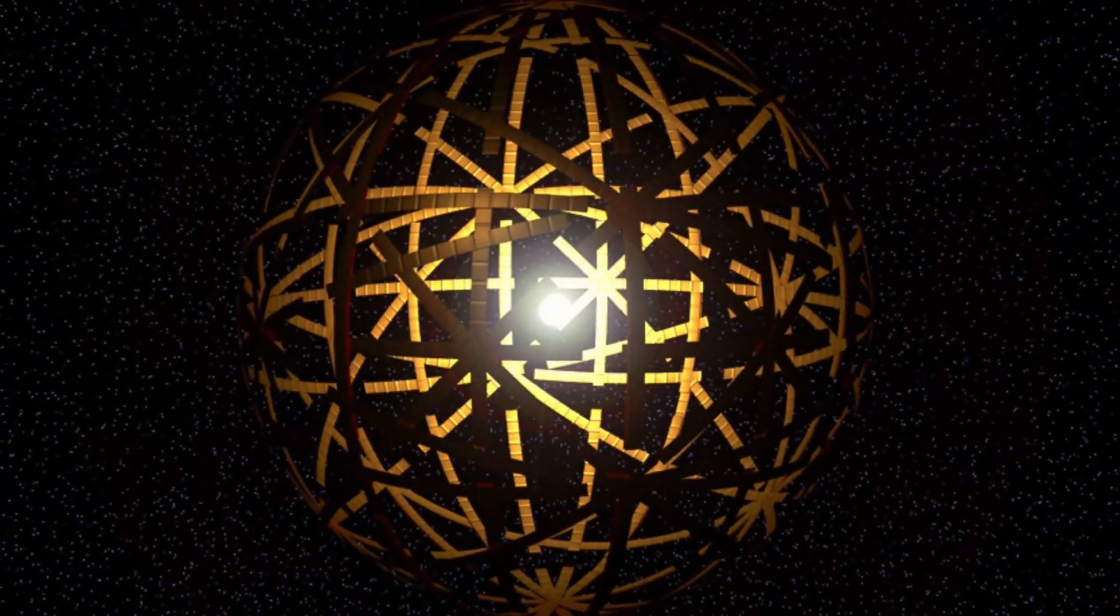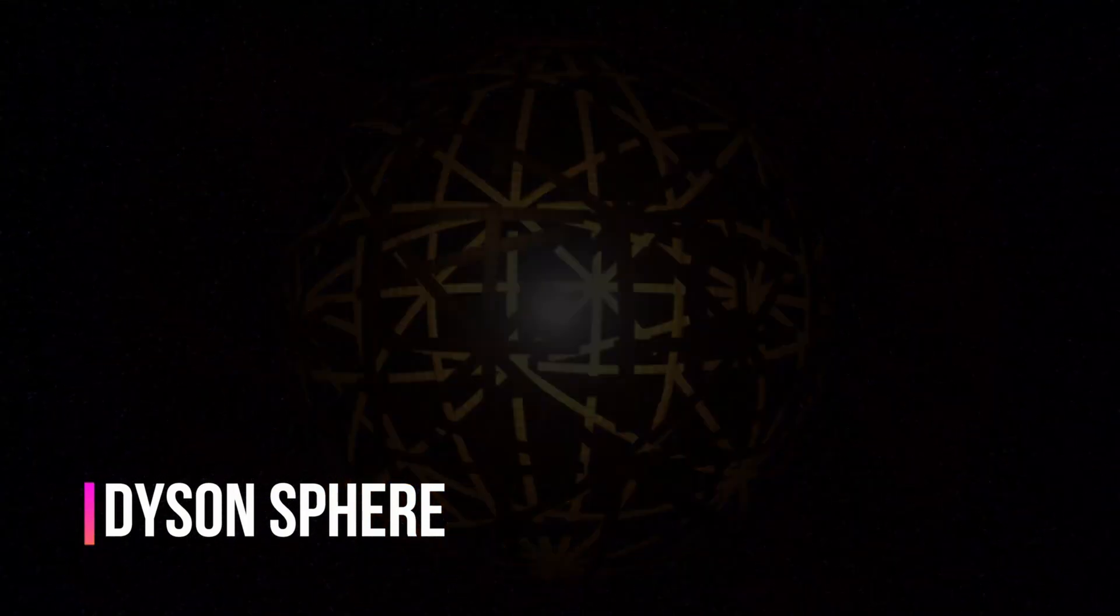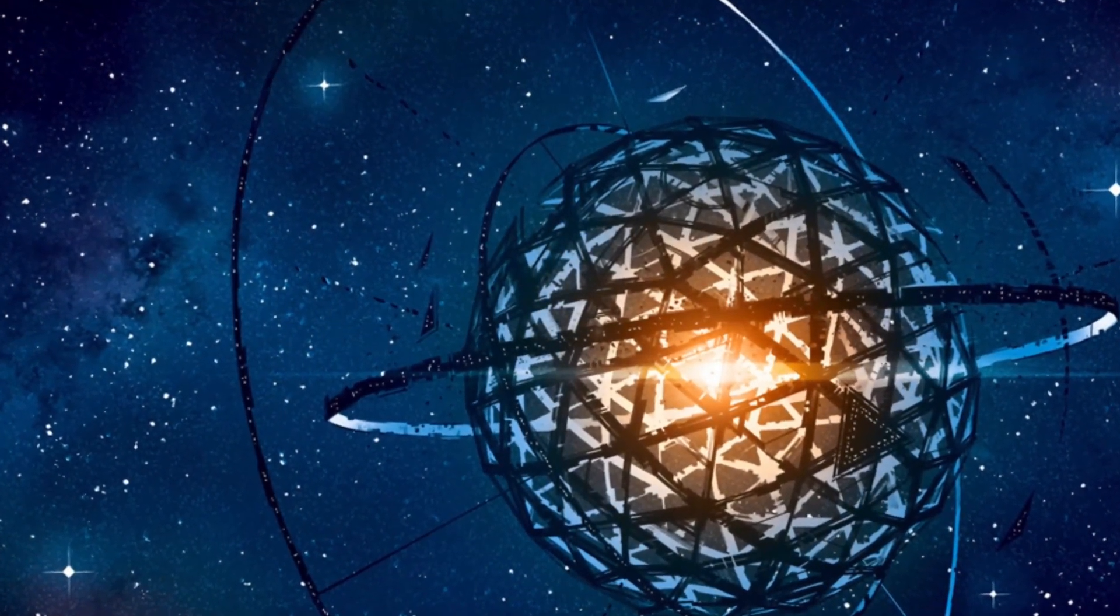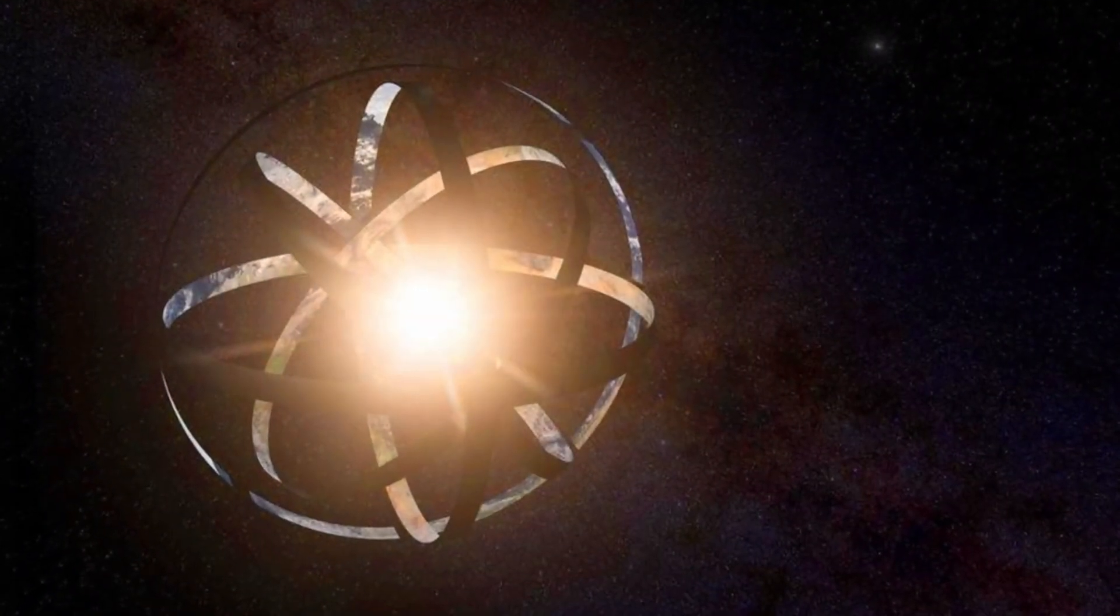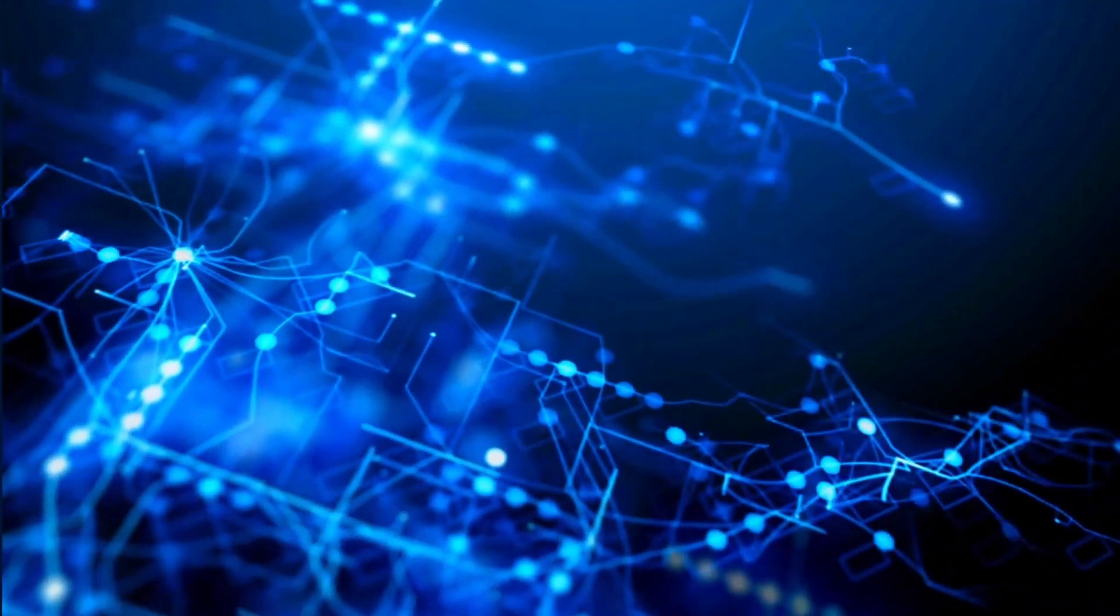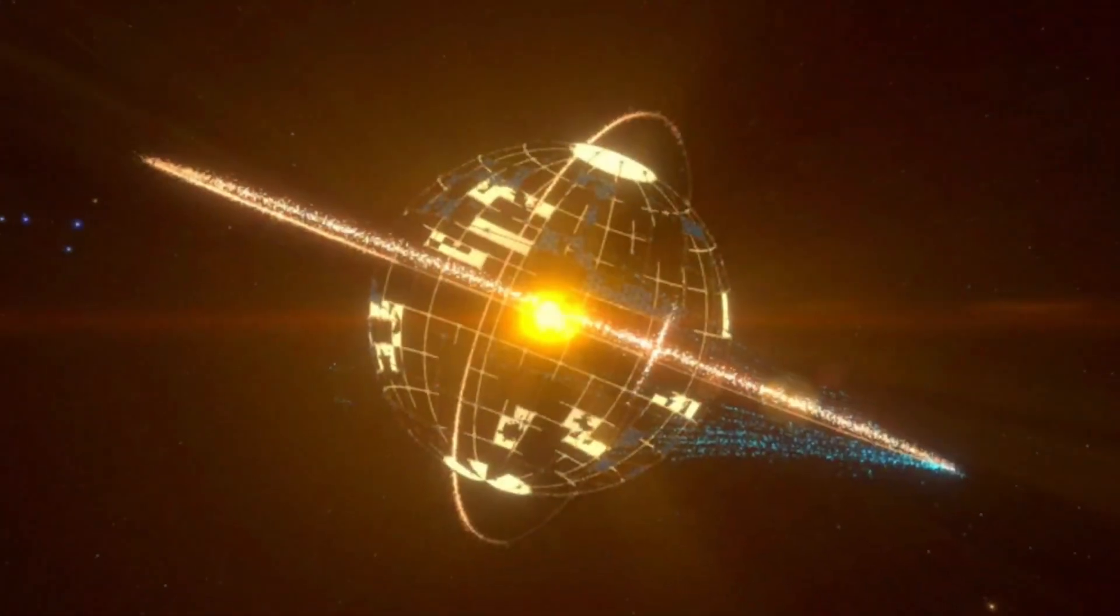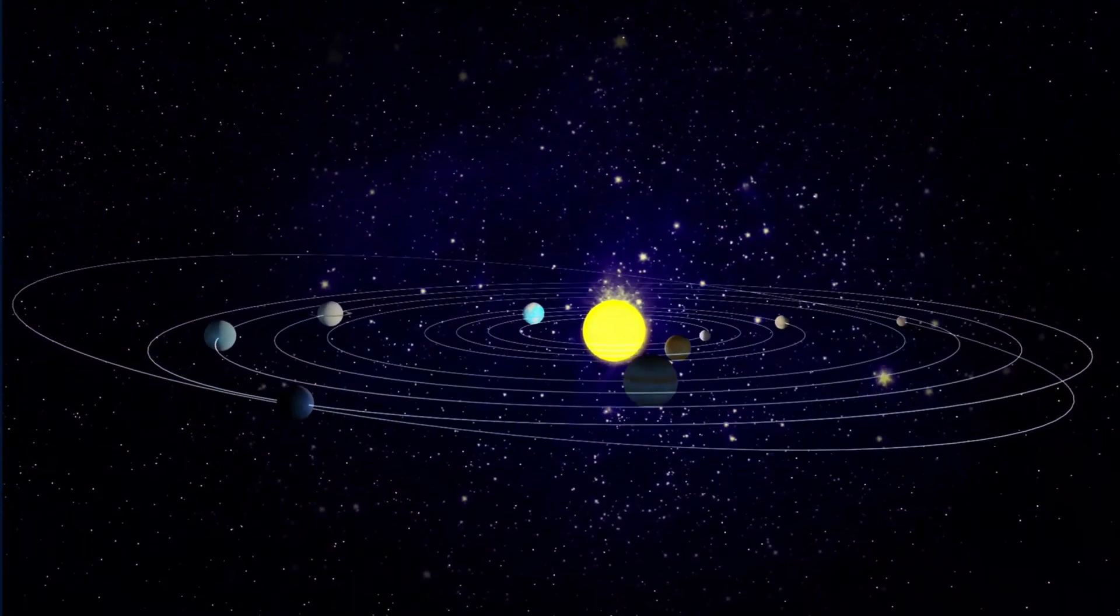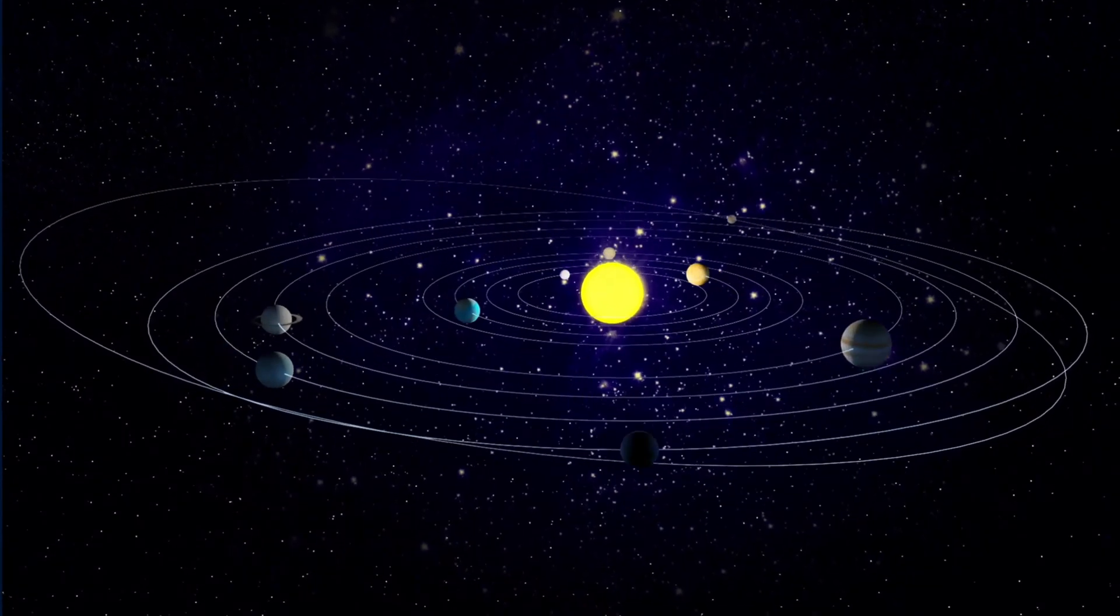One idea is to use a megastructure called a Dyson Sphere. In its simplified version, a Dyson ring would consist of a bunch of solar power collectors encircling a star at a distance of, say, 160 million kilometers. And as this civilization advances its technology, it would add more rings around a star, each with its own orbit. Eventually, this megastructure the size of our planet's orbit around the sun.